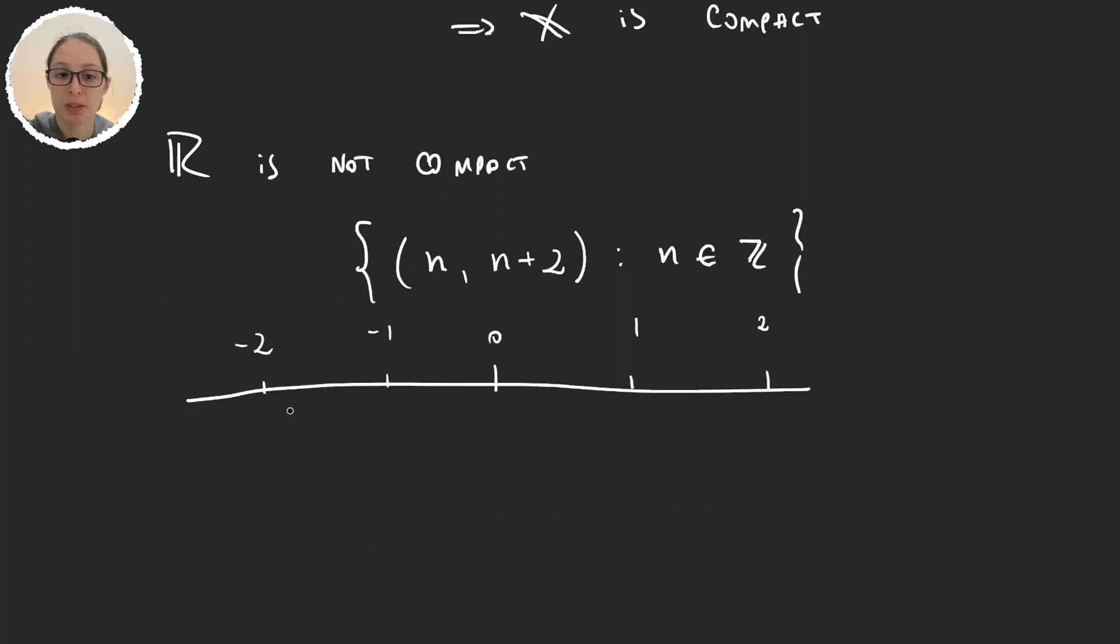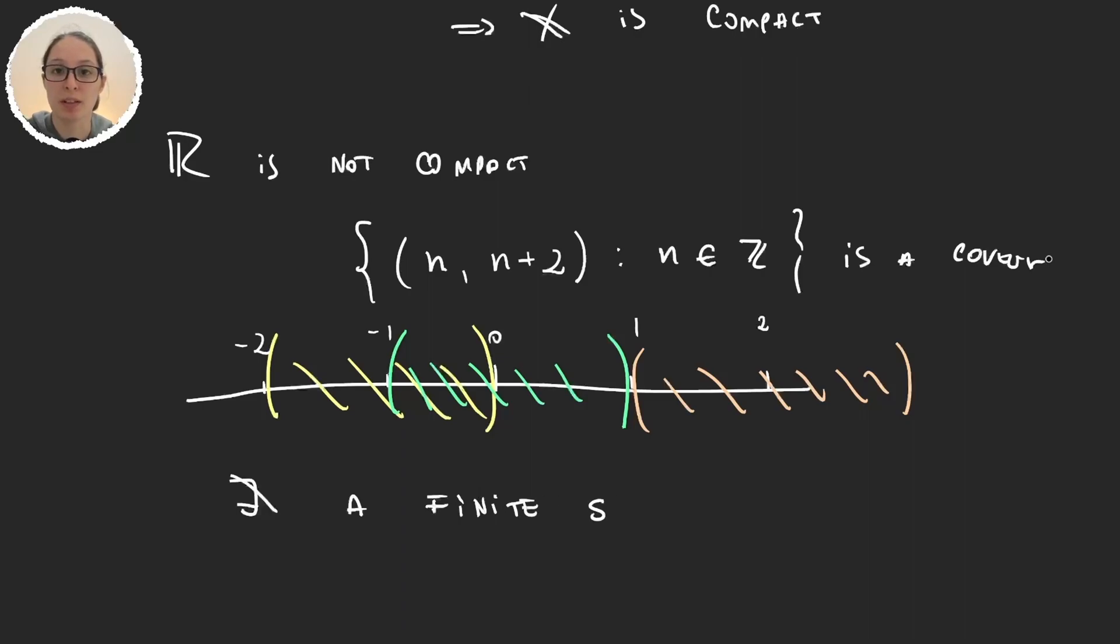Because what I'm doing is taking all these open intervals and so on. So this is a covering of ℝ, but there is obviously no finite subcover because if it did, then we would obviously be missing a few numbers. So no, the real numbers are not compact.